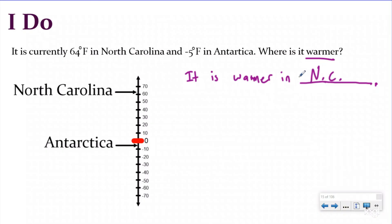So North Carolina is above zero and Antarctica is below zero, which means North Carolina is further up the number line. So we're going to say it is warmer in North Carolina. So again, thinking about how temperature works, if you are further up, you're warmer. If you're further down, you're colder.